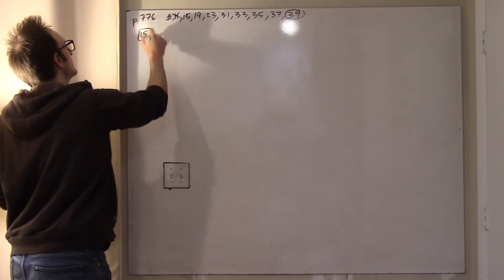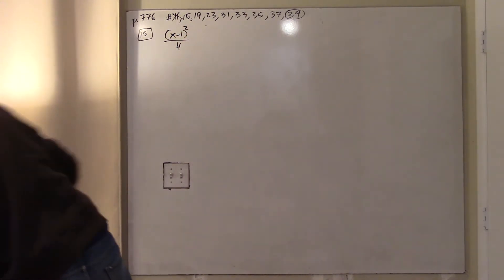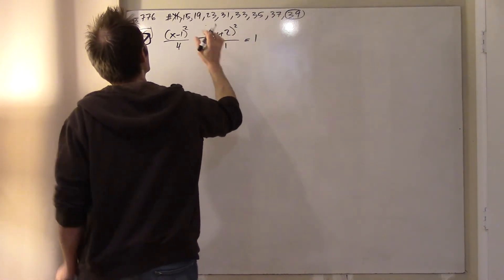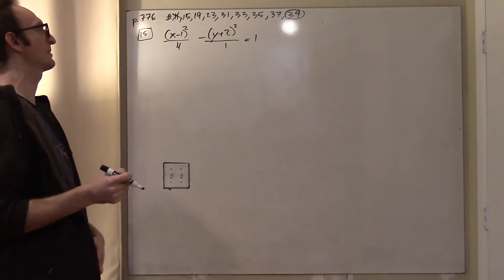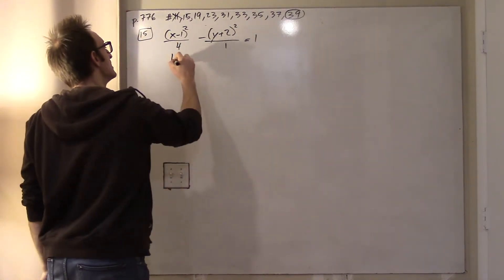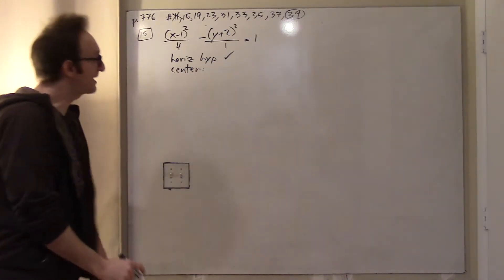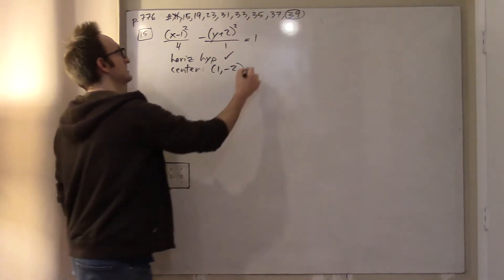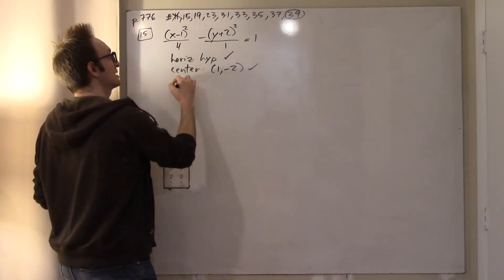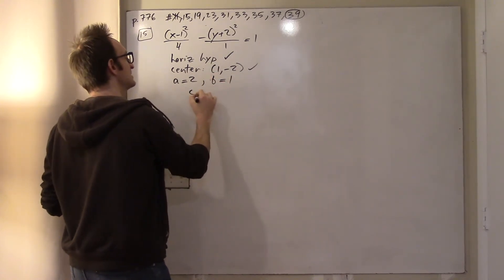Problem 15 is (x-1)²/4 minus (y+2)²/1 equals 1. Because it's in the form x² minus y², this is going to be a horizontal hyperbola. The center, instead of being at the origin, will be at (1, -2). The x-coordinate is being stretched by a factor of 2, so a is 2, and b is 1.